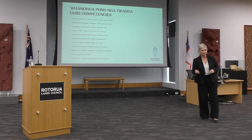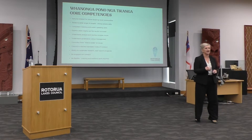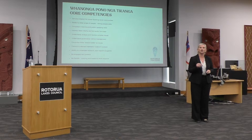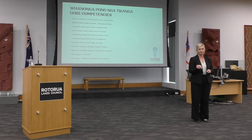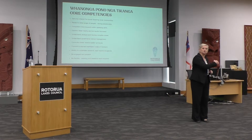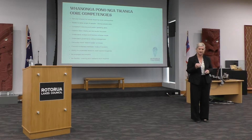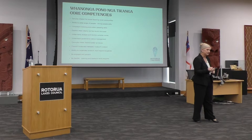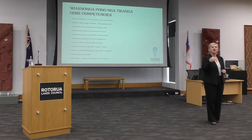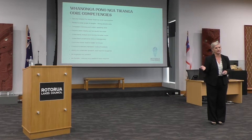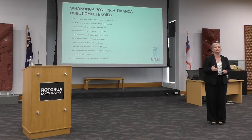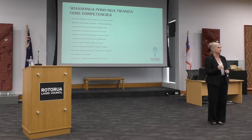One of the key things really important for elected members is understanding the difference between governance and management. The easiest way to sum that up is that council has only one employee, and that is the chief executive. Council sets the strategic direction and guides policy and bylaws, and instructs the chief executive to deliver that. Through the chief executive's staff, the operations are delivered and the council's vision is fulfilled.